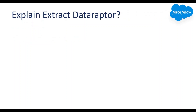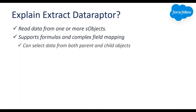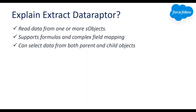Now let's discuss about Extract Data Raptor. Extract Data Raptor helps us to read data from one or more objects. It supports formulas and complex field mapping as well, so we can set field aliasing and output JSON structure as per our requirement. In Extract Data Raptor we can also select data from related objects — both parent and child. For example, if you want to get an accounts list with their respective contacts, and also the account owner name with account details, then we can achieve this using Extract Data Raptor.